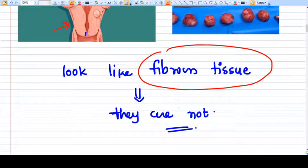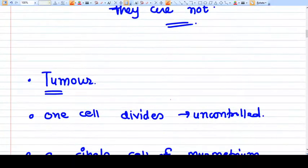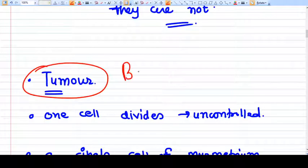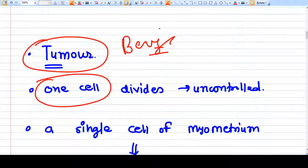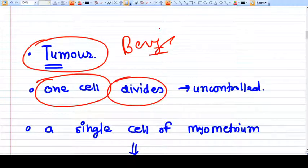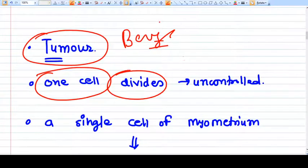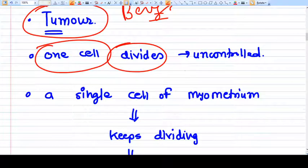But they are not fibrous tissue. What are they? They are tumors, benign tumors. How does a tumor develop? If one cell becomes uncontrollable and divides infinitely, it makes a tumor.